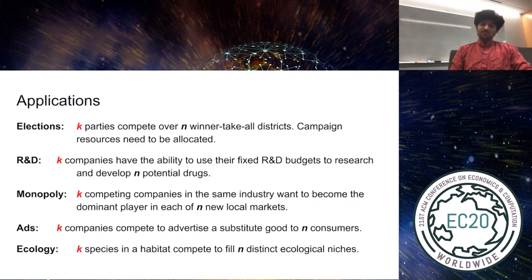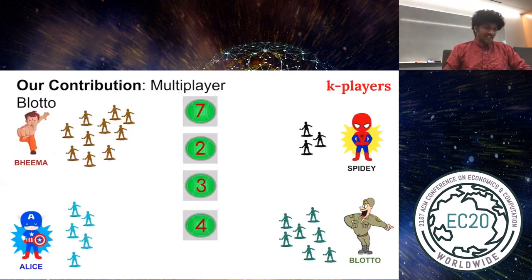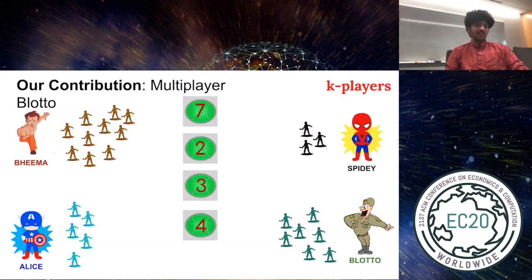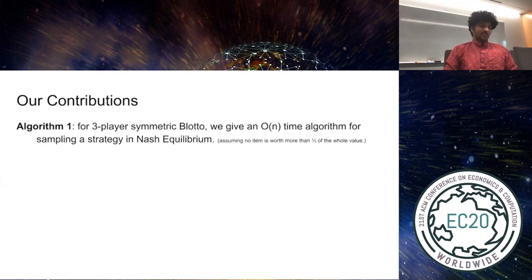In our paper, we formally introduced the multiplayer Colno Blotto game. In this game, there are k players, and each player allocates his troops between the battlefields, and each battlefield is won by the player who has allocated a plurality of troops to that field. Once again, ties are broken by splitting the value amongst the players who tied for the maximum allocation at a given battlefield. And our work derives mixed Nash equilibria for several cases of the symmetric multiplayer game. In particular, we focus on developing efficient algorithms for sampling the randomized equilibrium strategies of players. The highlight of our work is our result for three-player Blotto. We derive equilibria for the symmetric case of this game, even when the battlefield values are not homogenous. In fact, we give a linear time algorithm for sampling a Nash equilibrium strategy for each given player as long as no single battlefield is worth more than one-third of the total value.